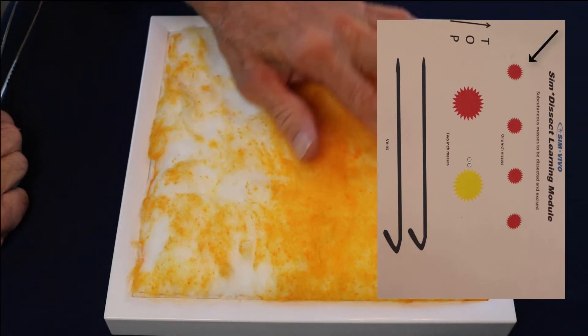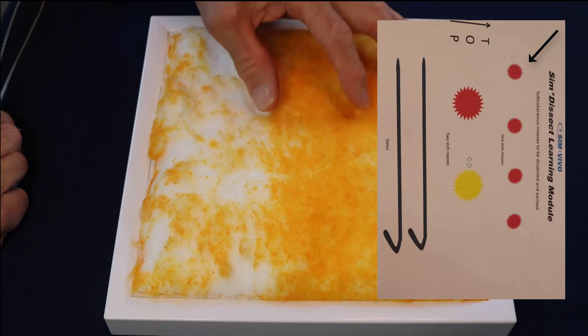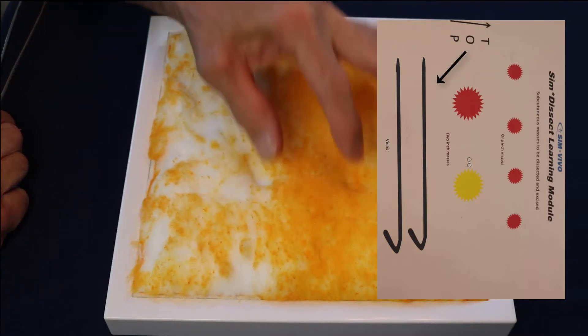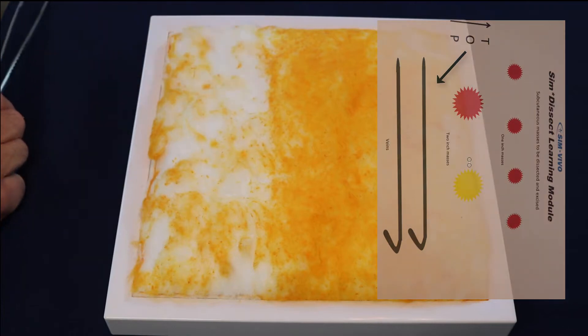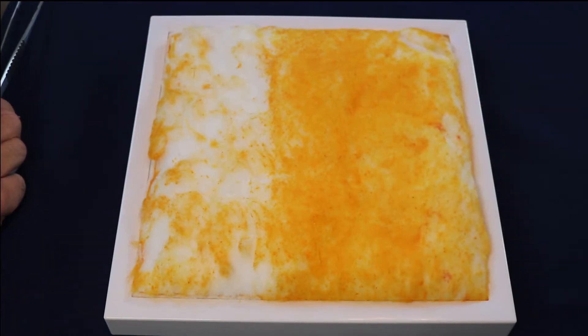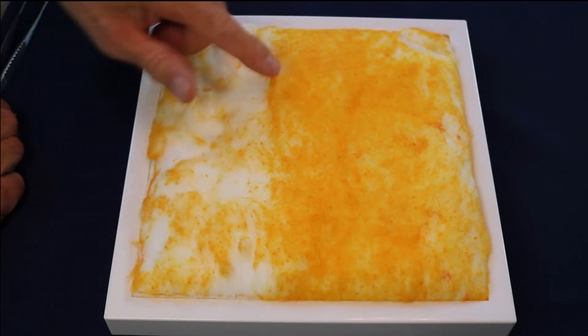Across the top are four small masses placed side by side. In the middle are two larger masses, and across the bottom lie two blue tubes that represent veins. You will not be able to palpate the veins and locating them will require some exploration.